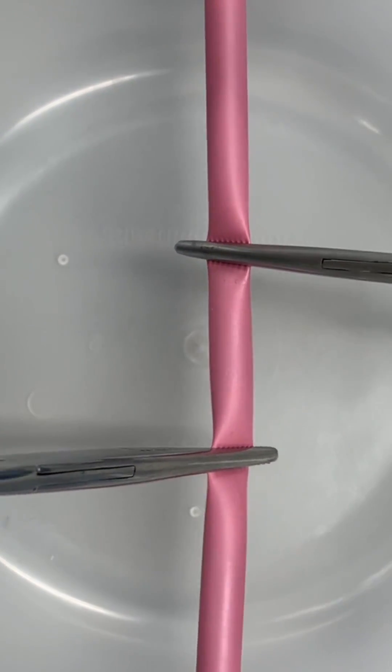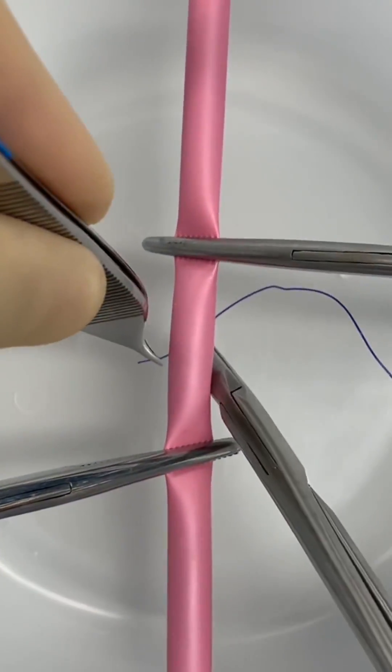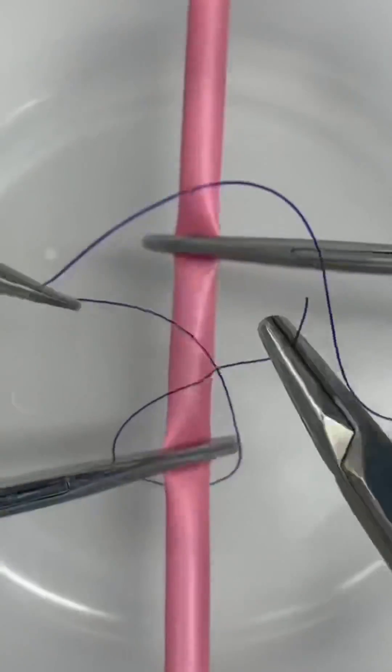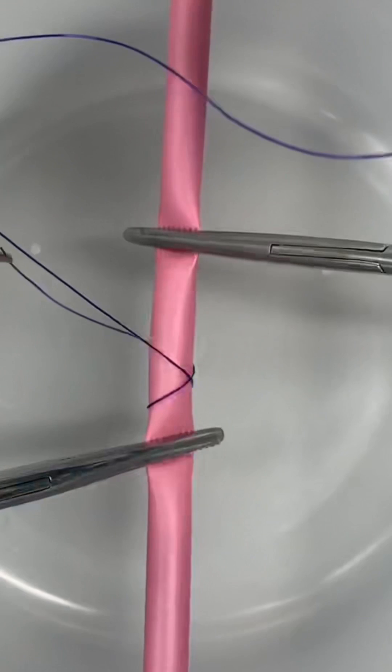Clamp the vessel using two hemostats and pass suture material around the vessel twice, ensuring that the short end goes over the long end to create an X.